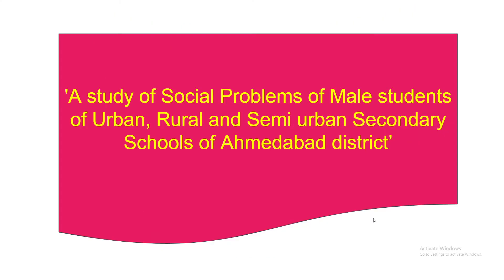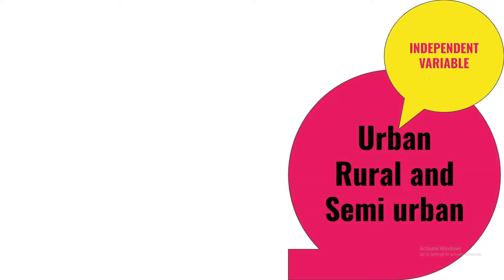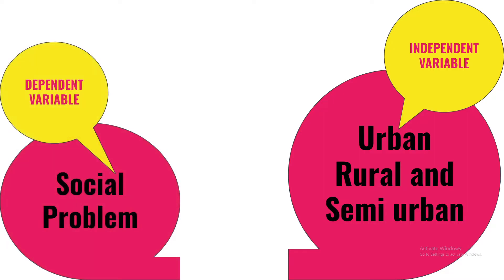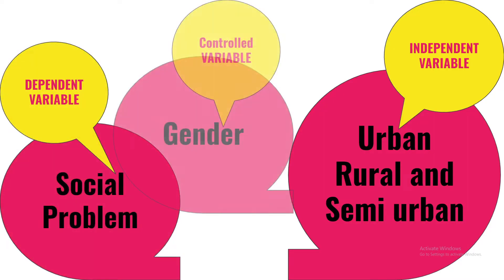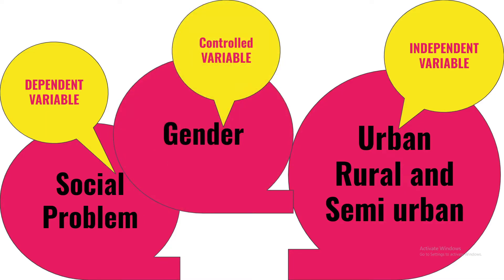In our previously mentioned example — a study of social problems of male students of urban, rural and semi-urban secondary schools of Ahmedabad district — the researcher classified variables such as: independent variable being area (urban, rural and semi-urban, called strata), social problem as the dependent variable, and gender as the control variable, which is male in our example. But some variables other than the moderator and control variables can also influence the cause and effect relationship of the dependent and independent variables in our example.